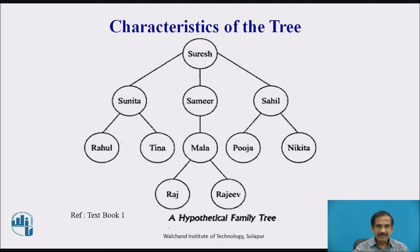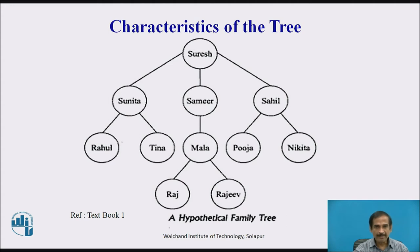For example, only the left sub-tree containing Sunita may be of importance to us if our goal is finding out who Tina is, while we could neglect the middle and right sub-trees. Therefore, the characteristics of the tree are of great importance.